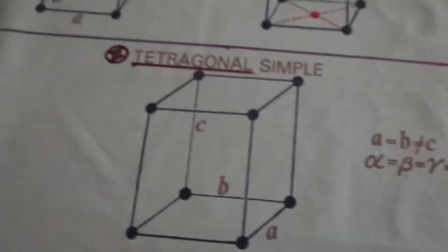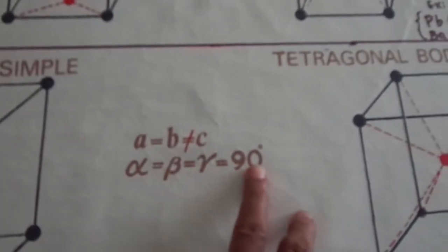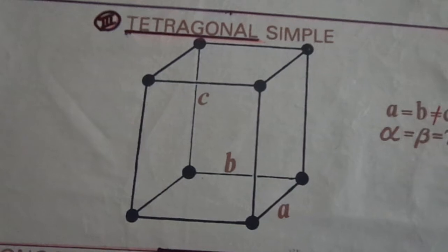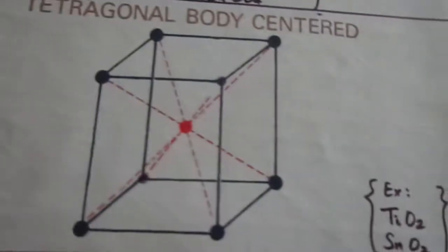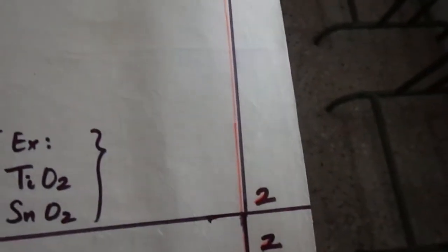Moving to the third type: tetragonal. Here A is equal to B, which is not equal to C, and alpha, beta, gamma are all equal to 90 degrees. There is a tetragonal simple type with only corner atoms present, and a body-centered type. The respective examples are shown, making two subdivisions in this system.